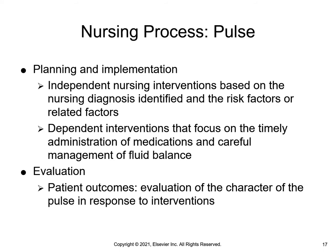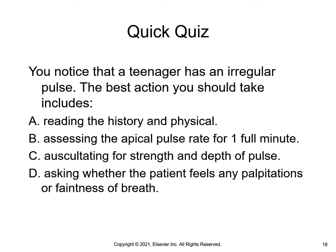A patient-centered plan of care is key to developing an exercise plan the patient will adhere to. The nurse will educate patients about the benefits of exercise and how to measure heart rate during exercise. Practice question: you notice a teenager has an irregular pulse — the best action includes A) reading the history and physical, B) assessing the apical pulse rate for one full minute, C) auscultating for strength and depth, or D) asking about palpitations or faintness. The answer is B — if you detect an abnormal rate palpating a peripheral pulse, the next step is to assess the apical pulse rate.